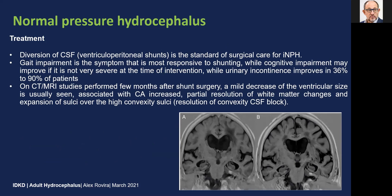Gait impairment is the symptom most responsive to shunting, while cognitive impairment may improve if it is not very severe at the time of intervention, and urinary incontinence improves in around 36 to 90% of patients. On CT and MRI studies performed a few months after shunt surgery, a mild decrease in ventricular system size is usually seen, associated with an increase in the callosal angle, partial resolution of white matter changes, and — importantly — expansion of the sulci over the high convexity, reflecting resolution of the convexity block.